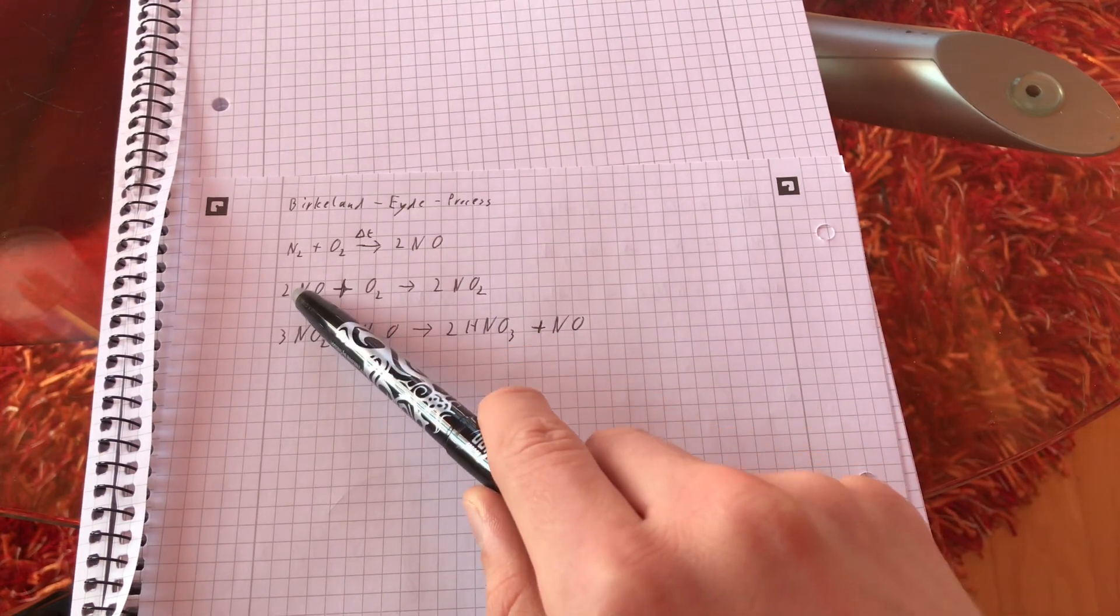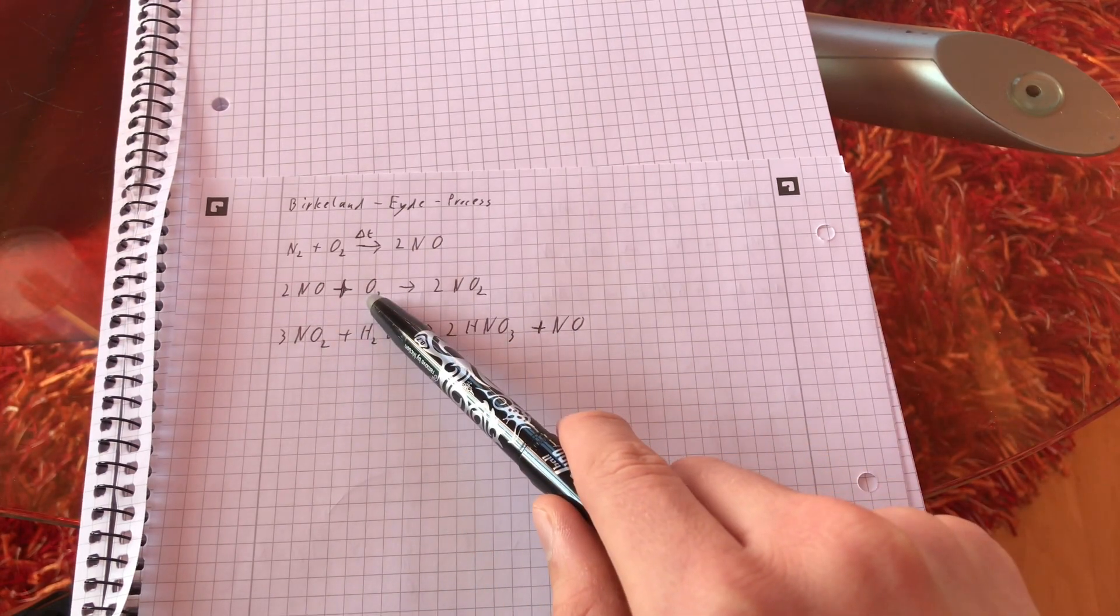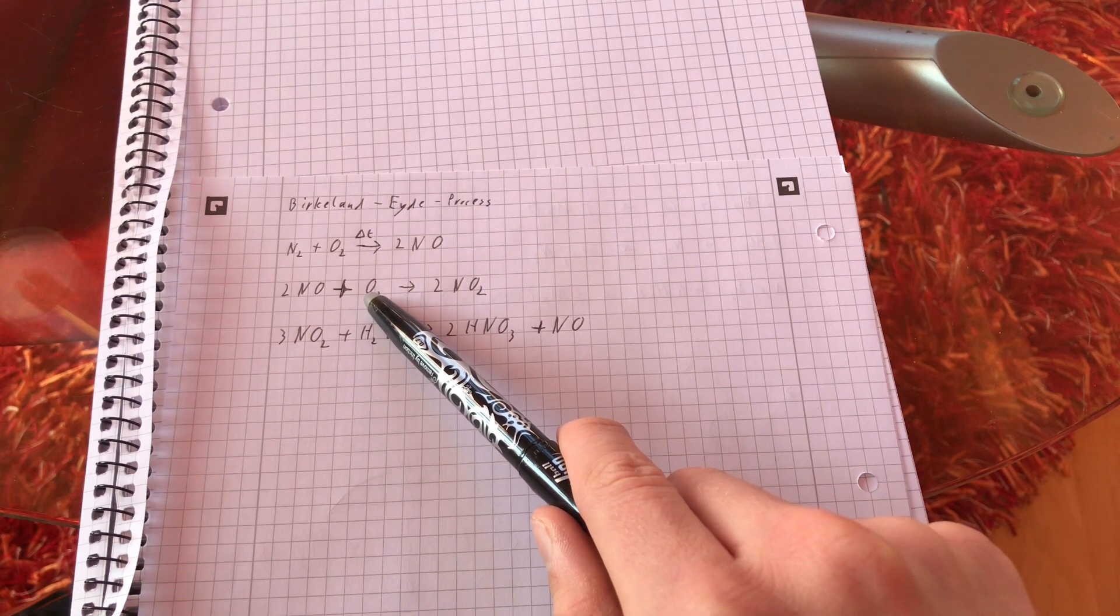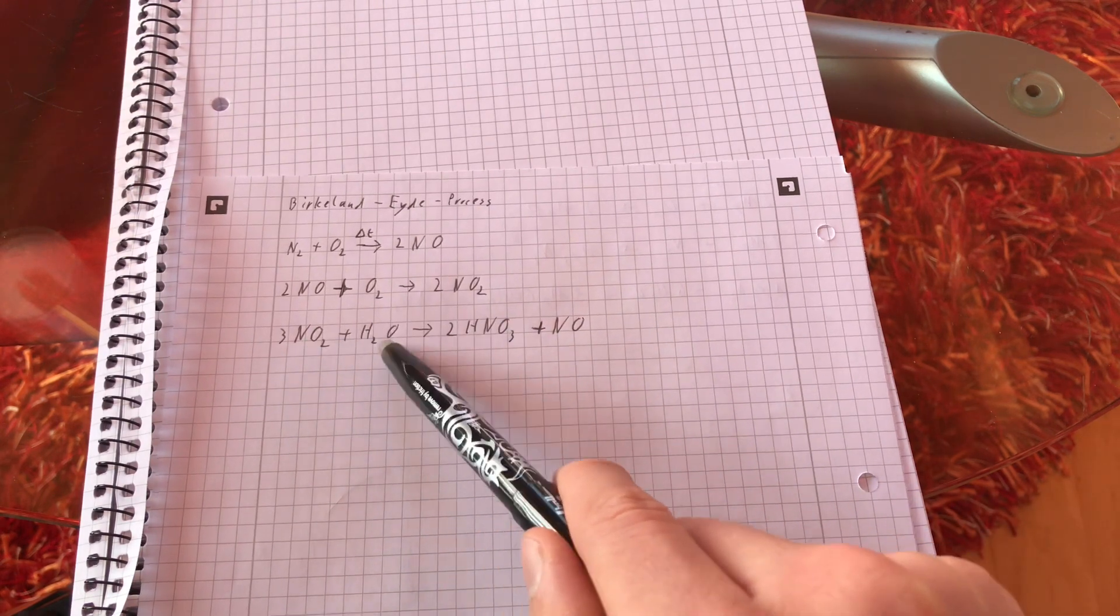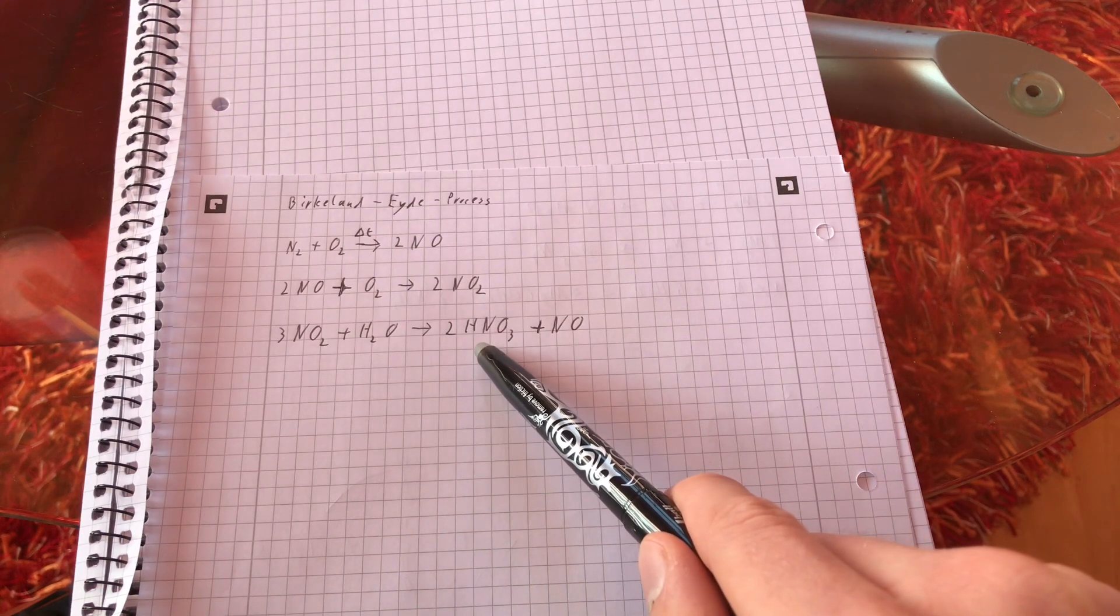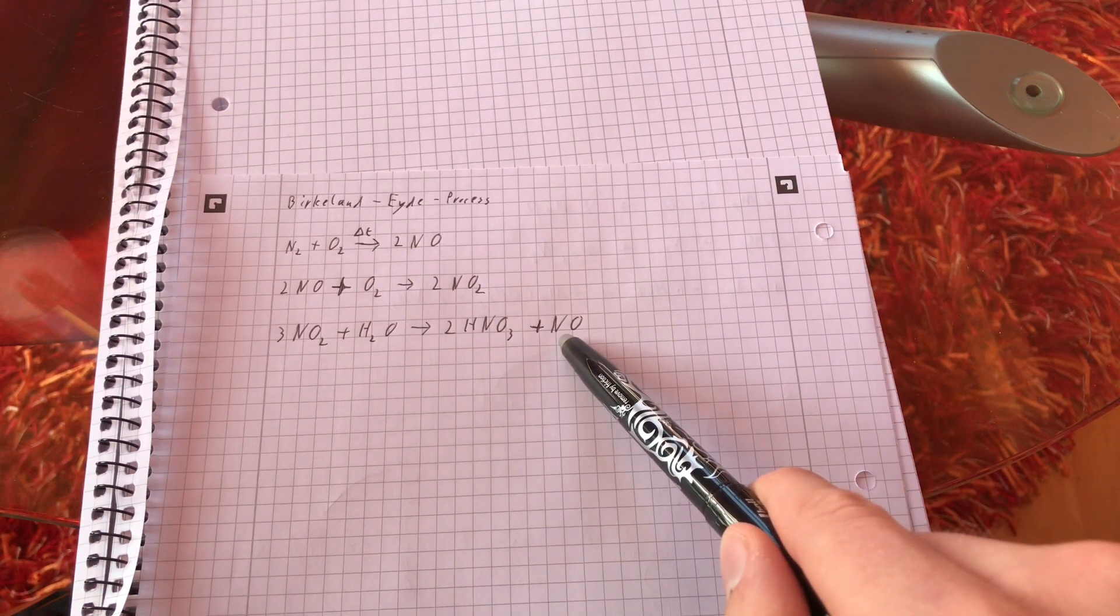This resulting nitrogen monoxide then further reacts with oxygen to form nitrogen dioxide. Our nitrogen dioxide when bubbled through water forms nitric acid and nitrogen monoxide.